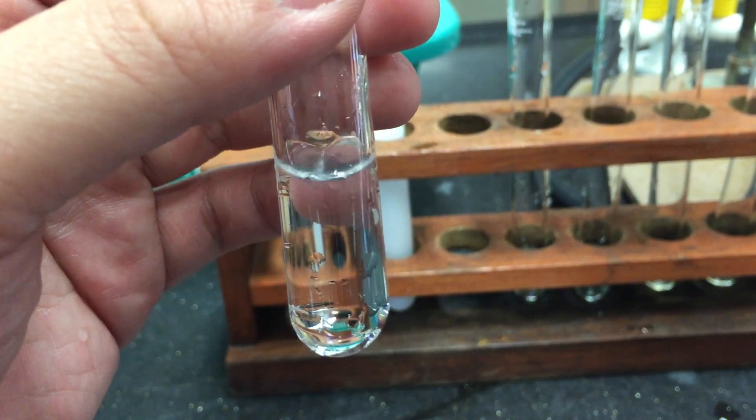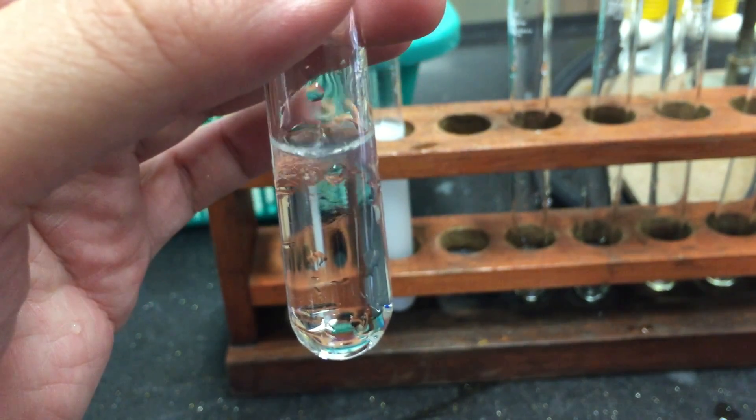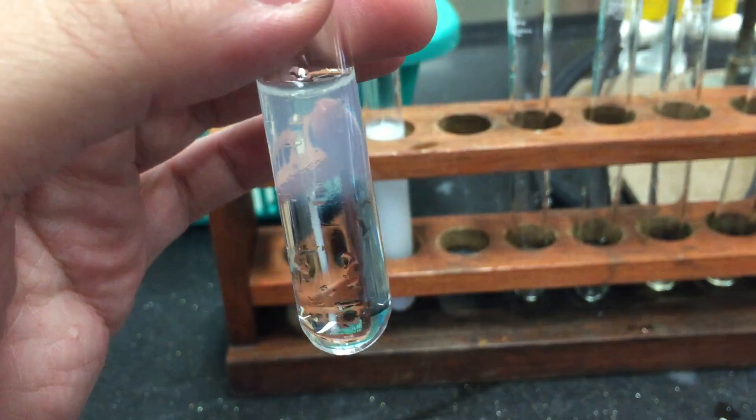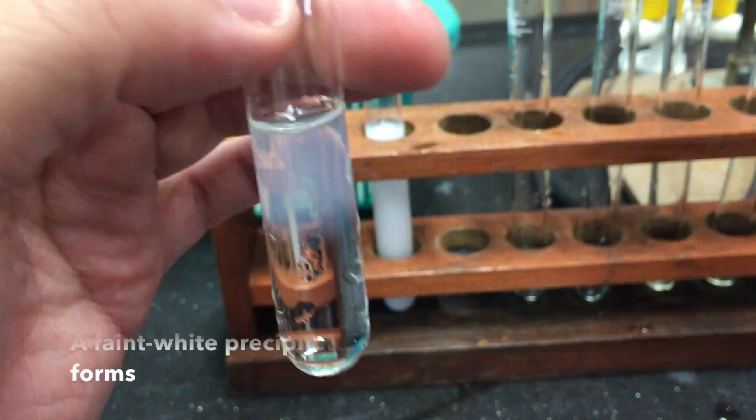Let us now repeat the experiment without disturbing the test tube too much. When a few drops of ammonia solution is added, notice that a faint white precipitate actually forms.